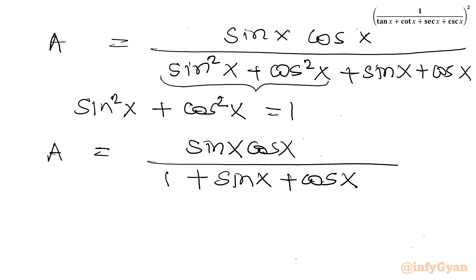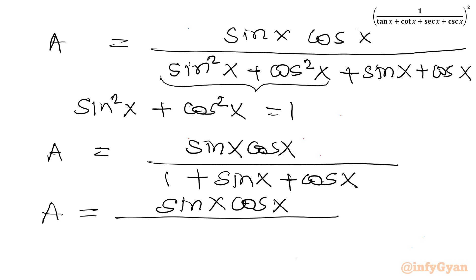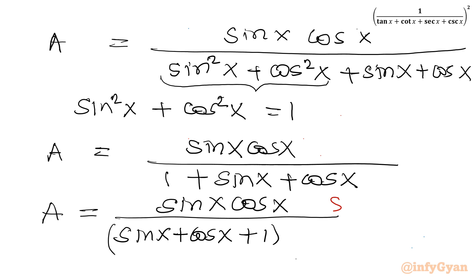Now I will consider rationalization. A = sin x · cos x / (sin x + cos x + 1). Multiply the numerator and denominator by (sin x + cos x − 1).